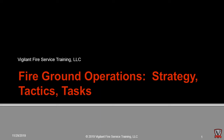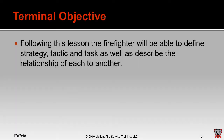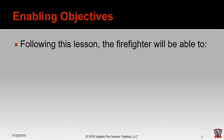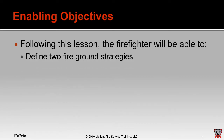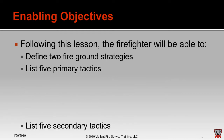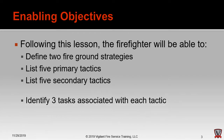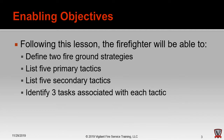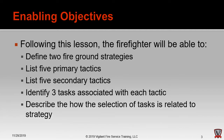This presentation covers fire ground operations: strategy, tactics, and tasks. The terminal objective is that following this lesson, the firefighter will be able to define strategy, tactic, and task, and describe the relationship of each to the others. Enabling objectives include defining two fire ground strategies, listing five primary tactics, listing five secondary tactics, identifying three tasks associated with each tactic, and describing how task selection is related to strategy.